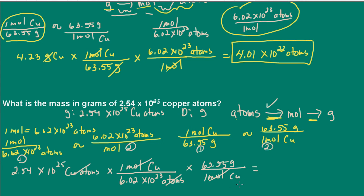Putting this into the calculator gives 2,681.3 grams. Now I check significant figures — I was given three significant figures, so I need to convert to scientific notation keeping three figures. That is 2.68 times 10 to the 3rd grams. I'm moving the decimal point three places to get the exponent.